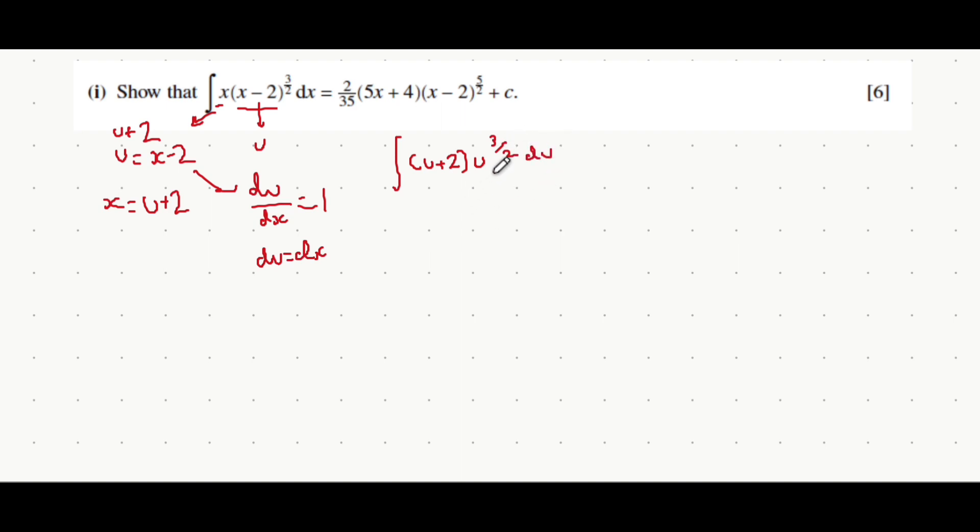Well, now that the power of 3 over 2 is only applied to a singular letter, and this bracket has a power of 1, you can multiply out the brackets. In the previous example, when it was in terms of x, you can't multiply out the brackets because this bracket here is not a power of 1. That's what we did here by using substitution.